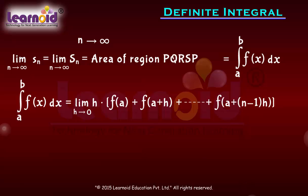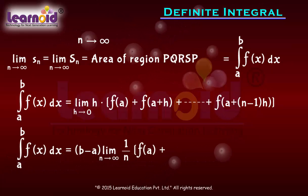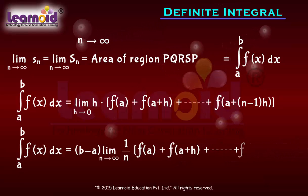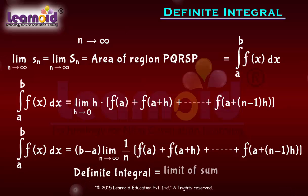Or in terms of n tends to infinity: (b-a) times limit as n tends to infinity of (1/n)[f(a) + f(a+h) + ... + f(a+(n-1)h)]. This is known as definite integral as the limit of sum.